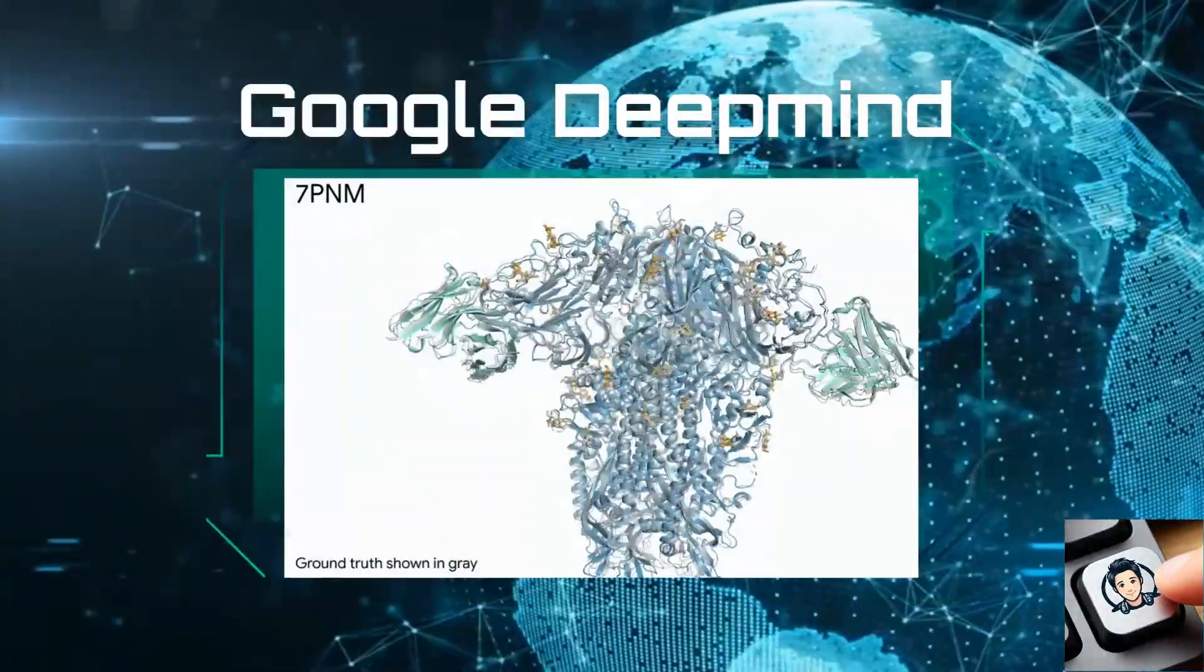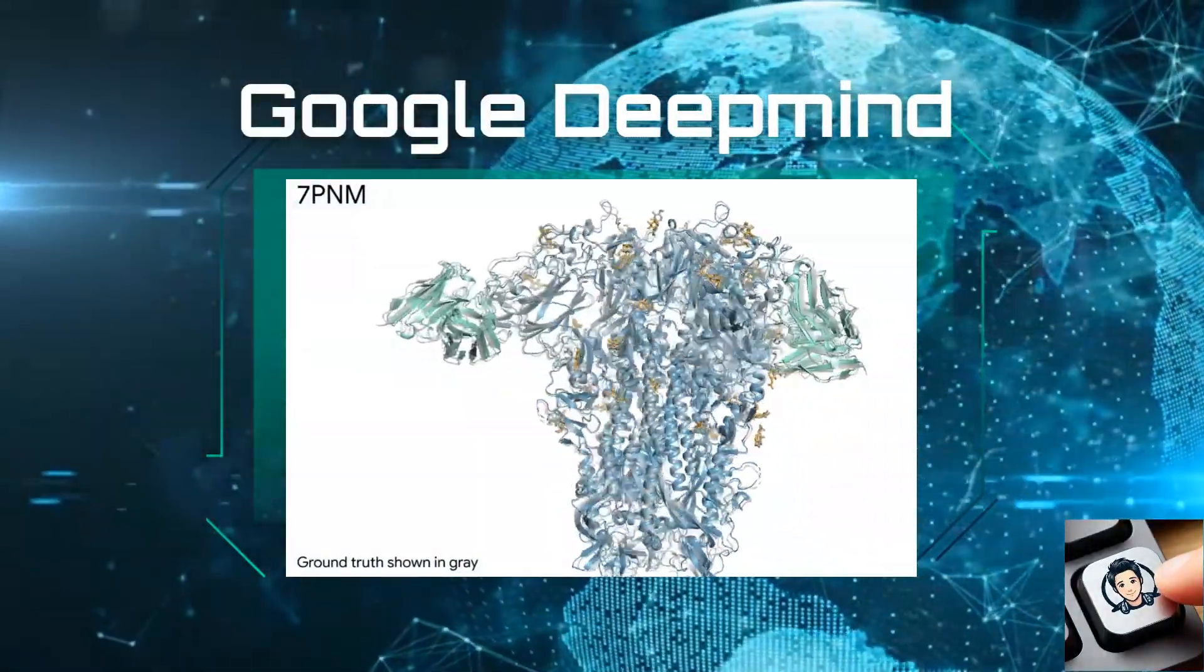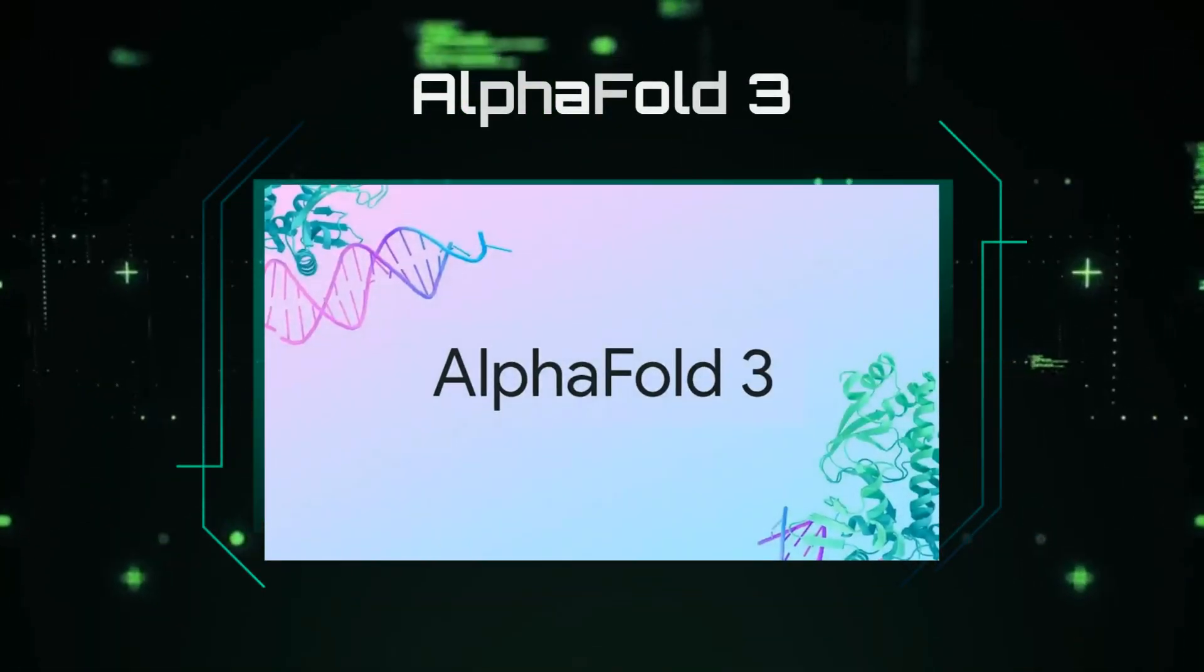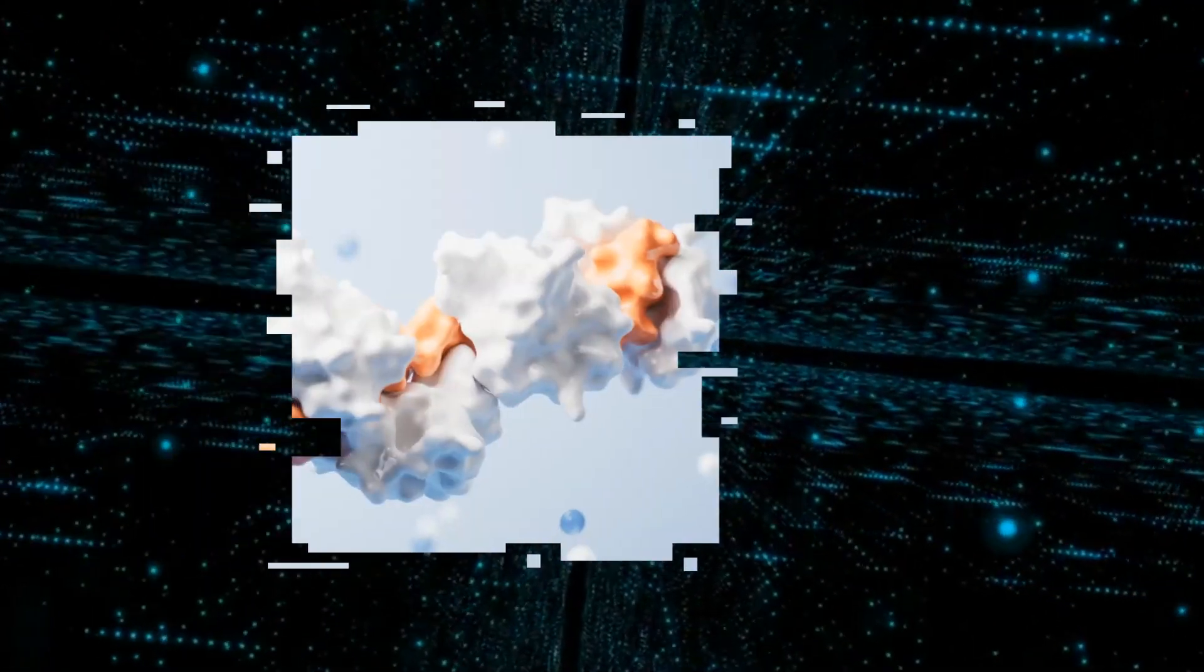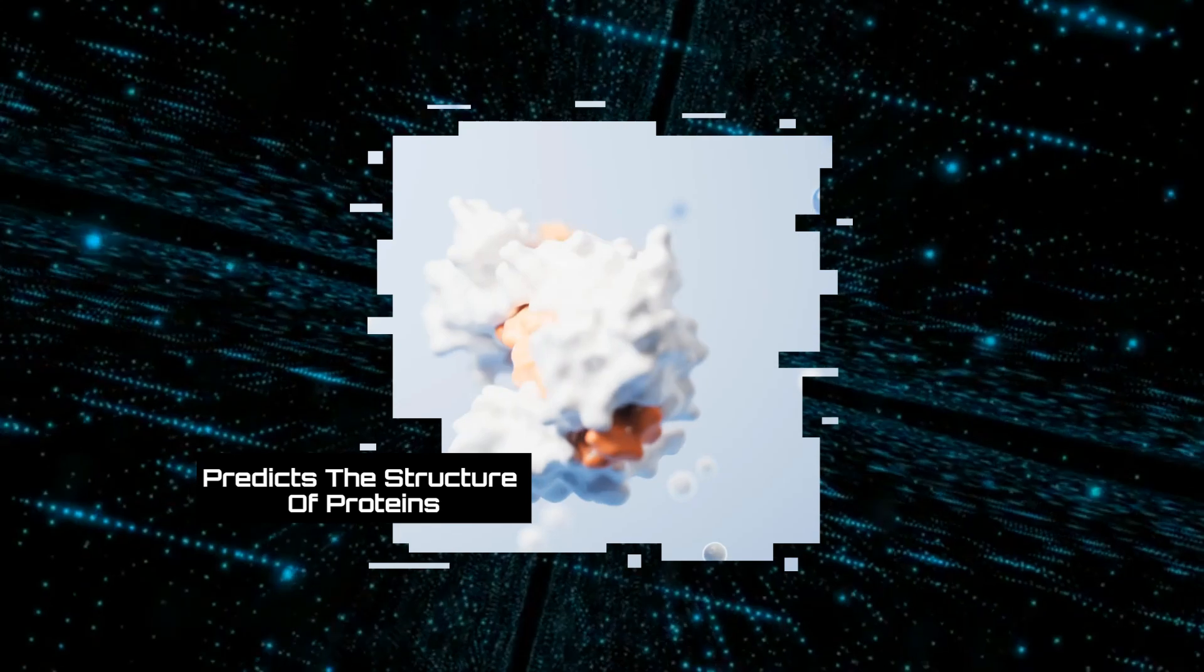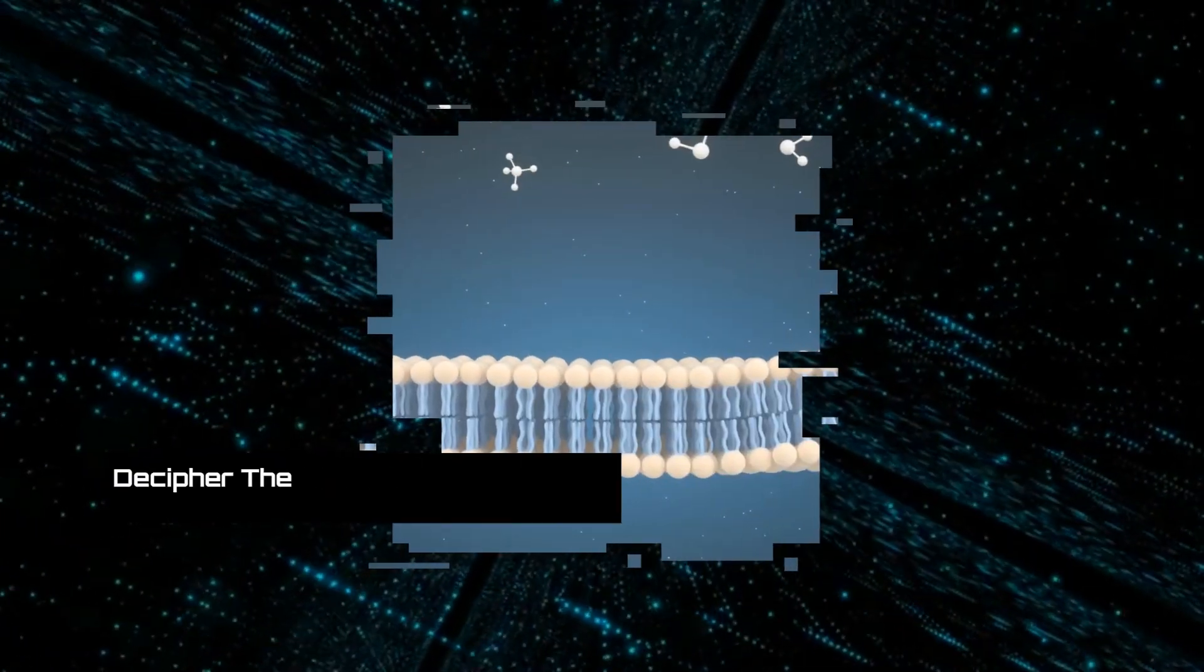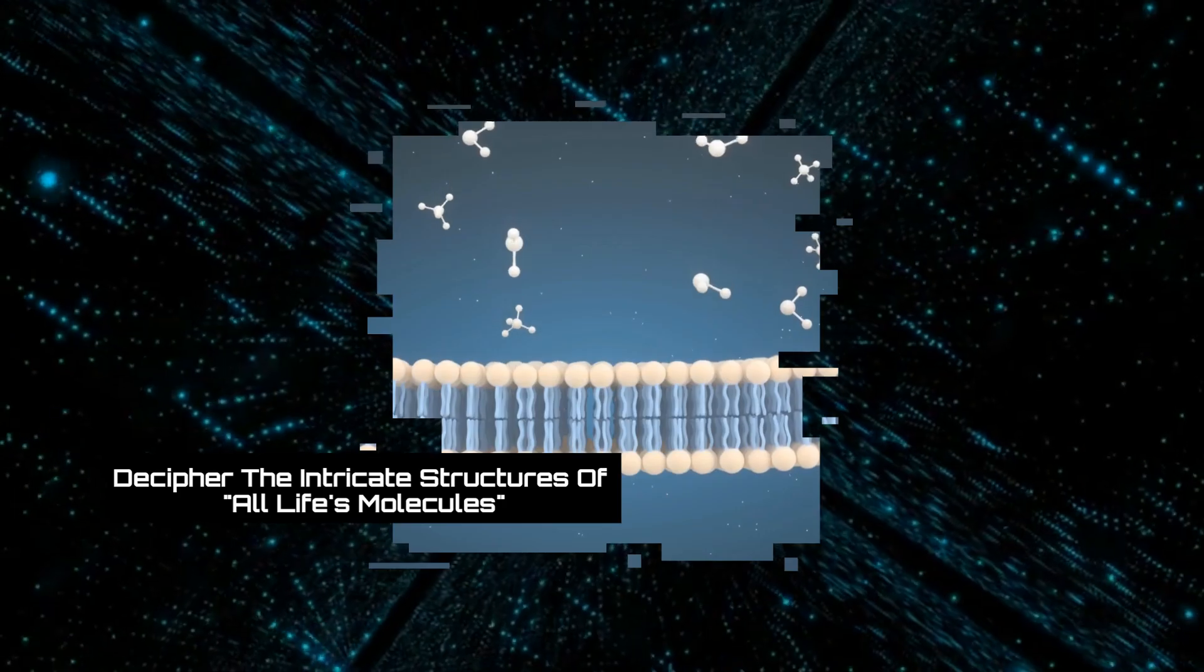Google DeepMind is revolutionizing the field of AI with its latest creation, AlphaFold3. This enhanced AI model not only predicts the structure of proteins, but also unlocks the ability to decipher the intricate structures of all life's molecules.